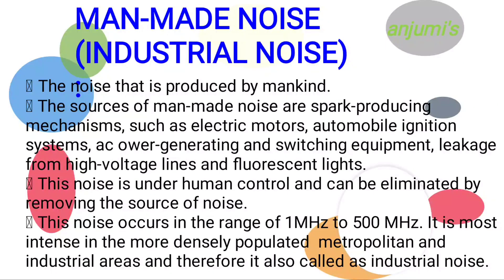Man-made noise, or industrial noise, is caused due to the production of unwanted electrical signals from electrical appliances like electric motors, automobile aircraft ignition, fluorescent lights, and so on. It can be controlled and eliminated. Man-made noise is most effective in the frequency range of 1 to 500 megahertz. It is most intense in densely populated metropolitan and industrial areas, which is why it is called industrial noise.